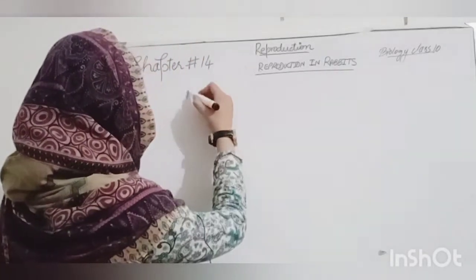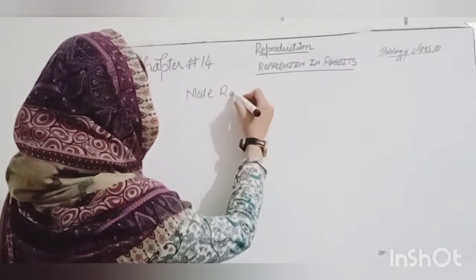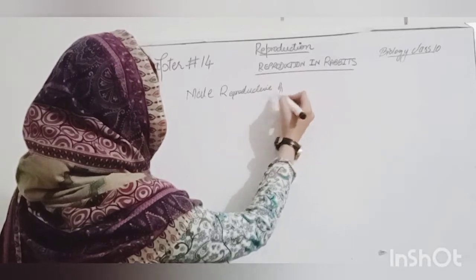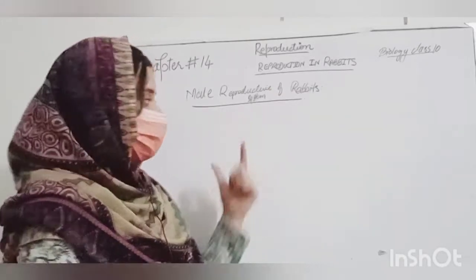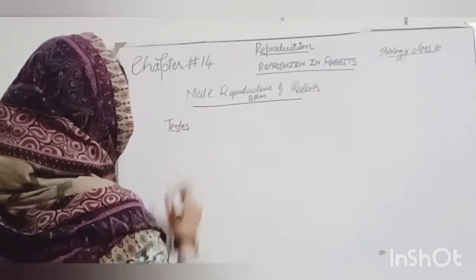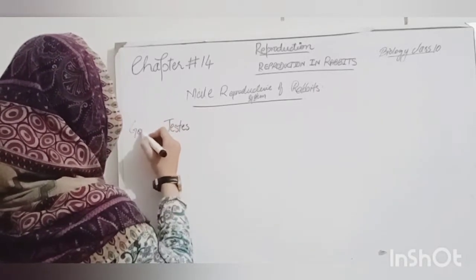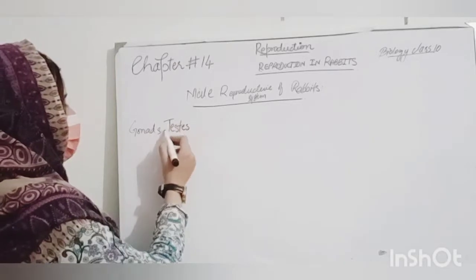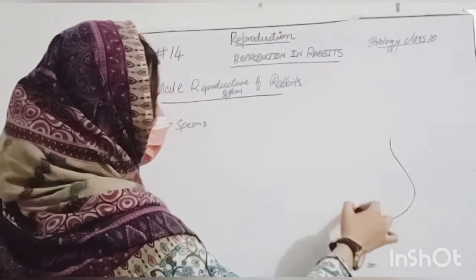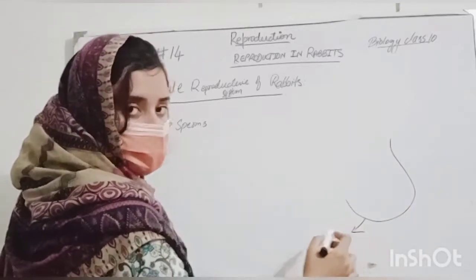First of all, we study the male reproductive system. We talk about the male reproductive system, so we call the testes. The testes are the male reproductive system. The testes are produced by sperm. If we look at the structure of this, we call this male-like structure, which is scrotum.